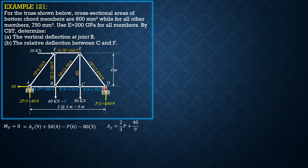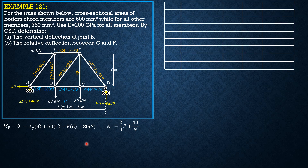We have color coding: bottom chord members have cross-sectional areas of 600 mm² (blue), and all other members have 750 mm² (orange). Now let's tabulate the results. The table columns are: member number, force S in kilonewtons, partial derivative of S with respect to P, length in meters, and the product S times (∂S/∂P) times L in kilonewton-meters. The units conversion factor to newton-mm will be applied later.